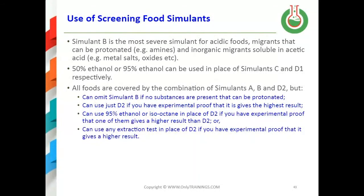Regarding screening food simulants: simulant B is the most severe simulant for acidic foods and migrants that can be protonated, such as primary aromatic amines and inorganic migrants like metal salts and metal oxides soluble in acetic acid. 50% ethanol or 95% ethanol can be used in place of simulants C and D1 respectively — C being 20% ethanol and D1 being 50% ethanol.